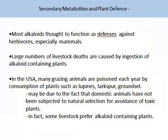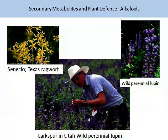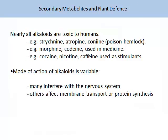There may be a number of factors at play here. Domestic animals have not been bred for natural selection characteristics, and some livestock actually prefer the alkaloid-containing plants. Humans have a complex relationship with alkaloids. Many alkaloids are toxic to humans, but some, such as morphine and codeine, are used in medicine, while others are stimulants, such as caffeine, nicotine, and cocaine. The mode of action of alkaloids is variable — many will interfere with the nervous system, while others may affect membrane transport or protein synthesis.